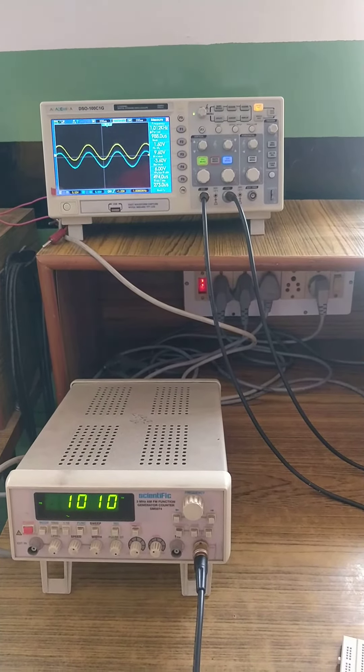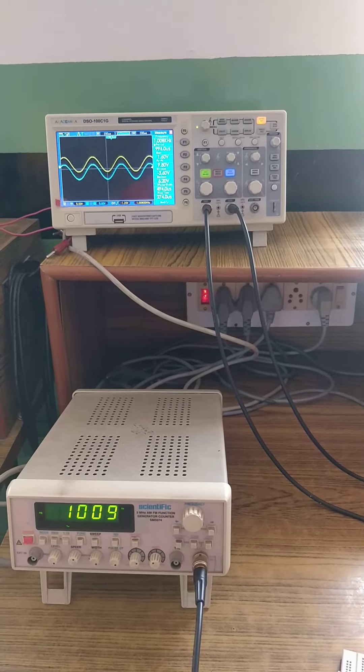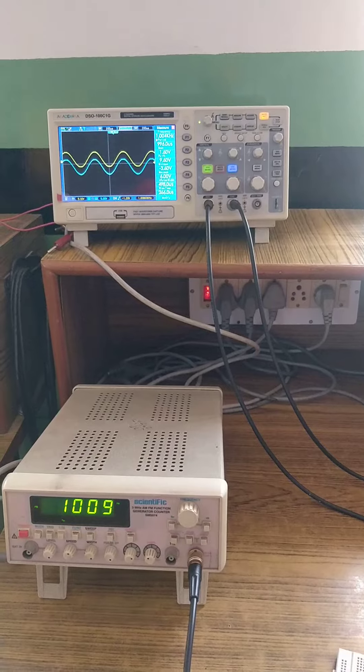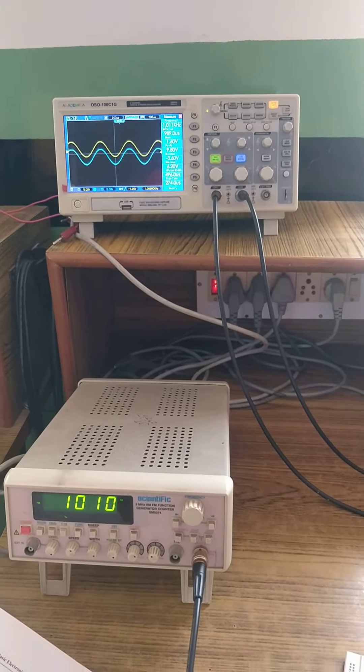So using this clamper circuit, we are shifting the waveform upper side or lower side depending upon the value of capacitor and its location along with diode. Thank you so much.